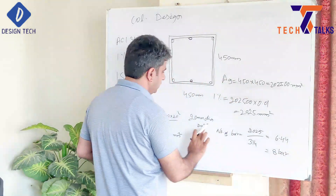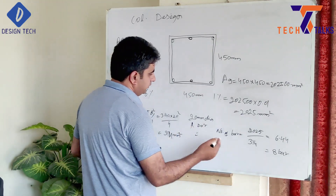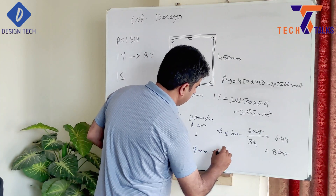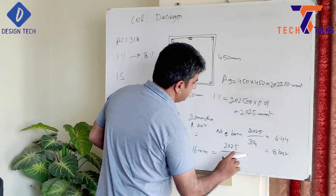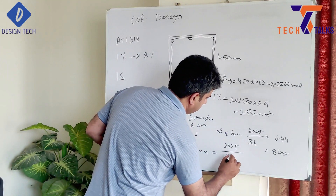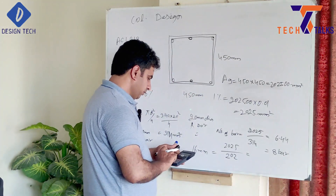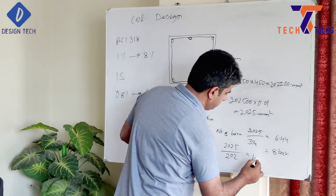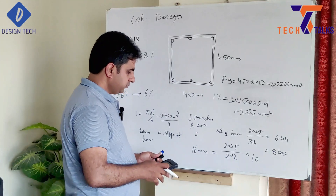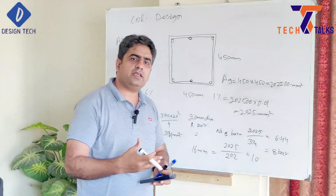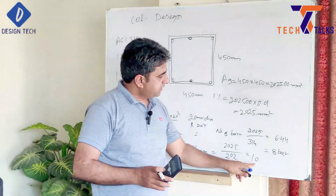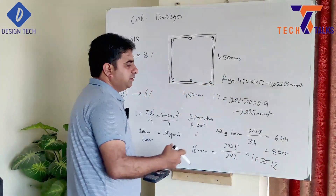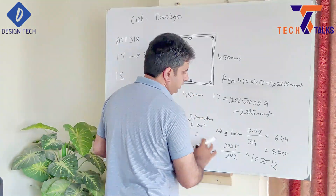Now let's consider using 16 mm diameter bars. The area of a 16 mm bar is 202 mm². Dividing 2,025 by 202 gives approximately 10 bars. However, to maintain symmetry in the reinforcement arrangement for a square column, we need to go for 12 bars when using 16 mm diameter bars.